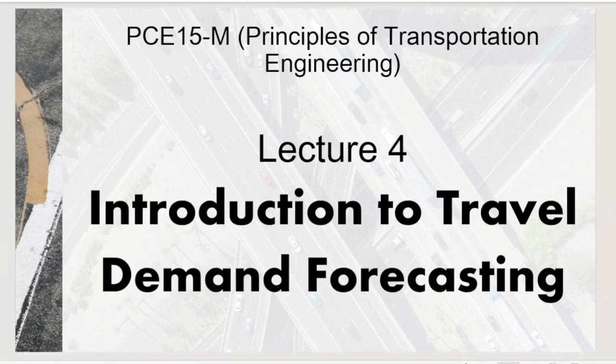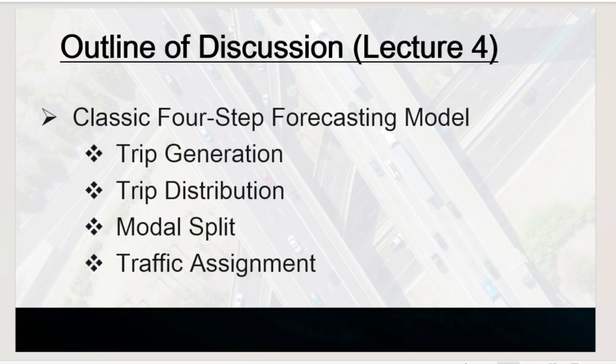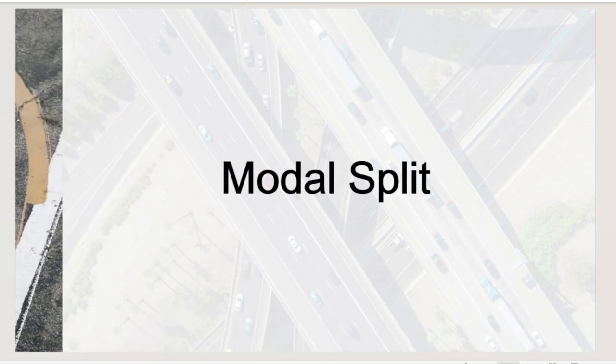To continue our discussion on the introduction to travel demand forecasting, we're going to discuss modal split and traffic assignment. The first two steps — trip generation and trip distribution — have been discussed last week. We will continue the discussion for the other two steps of the classic four-step forecasting model. Let's start with modal split.